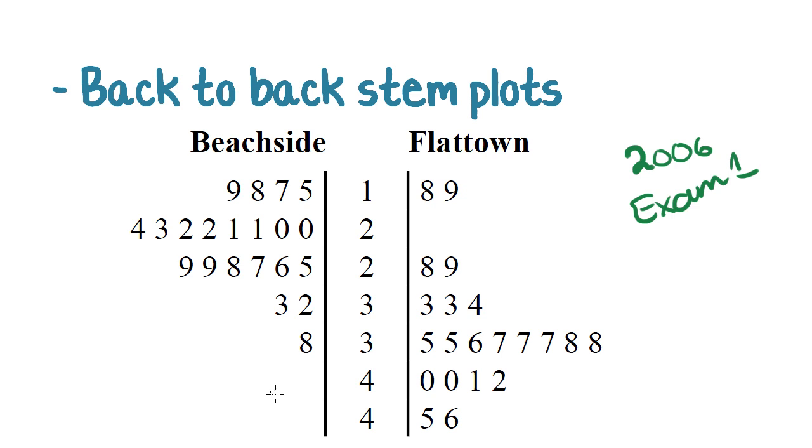You find the median on a back to back stem plot in the same way. You just find the median for each side separately. So 1 from the bottom, 1 from the top, 1 from the bottom, 1 from the top, this is the next highest number. 1 from the bottom, 1 from the top, 1 from the bottom, 1 from the top, this is the next highest number. Continuing this process, this here is the median.